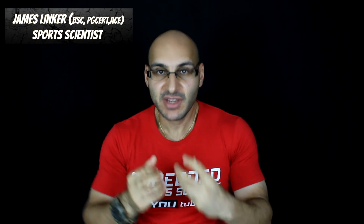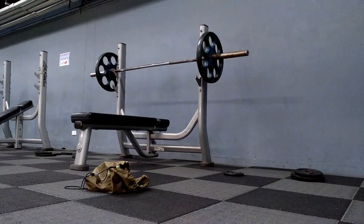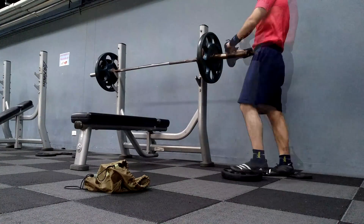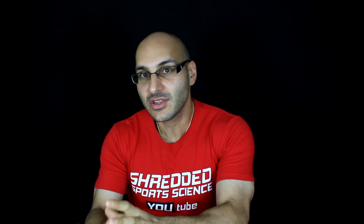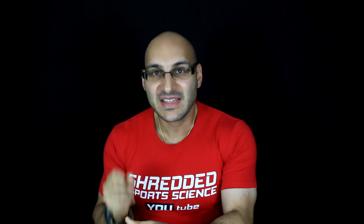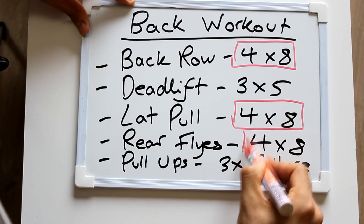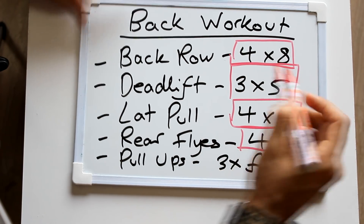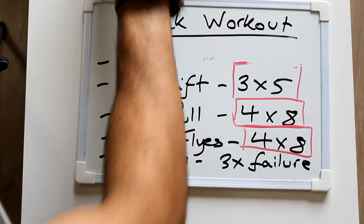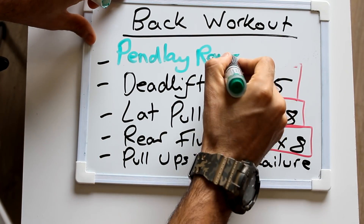You need to be able to categorize your exercises in order to create an efficient program. The equation that underlies all training is force equals mass times acceleration. Everything you do in the gym is some combination of mass times acceleration. The force you produce to overcome the inertia of the weight you are moving will be dependent on the mass and the acceleration. By the end of this video you should be able to go through your workout program and identify where you are overdoing some exercises and where you can implement others.